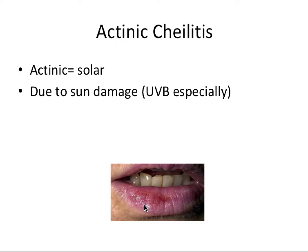Next, we have actinic cheilitis. Actinic always refers to solar — some form of sun damage. Cheilitis, which we've seen before, refers to lip inflammation. This condition is due to sun damage, specifically UVB rays. Just remember: B is for bad. There's UVA, UVB, and UVC, and UVB is the bad type that causes actinic cheilitis.